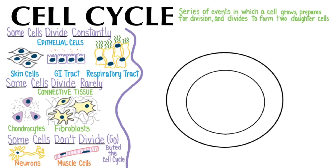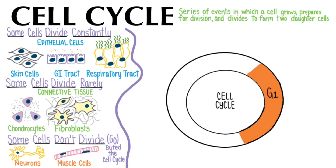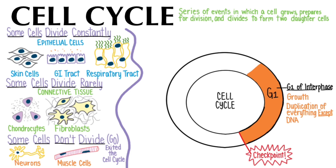We'll use this circle to represent the activities that occur during the cell cycle. The first portion is called G1. The G sometimes is said to stand for growth, and sometimes it's described as gap. G1 of interphase is a time of rapid growth in size of the cell, as it accumulates lots of enzymes necessary for the upcoming division, and duplicates organelles and most everything except for the DNA. A checkpoint occurs here, confirming that the cell is healthy and prepared to divide. Mutations in the DNA or other serious cell problems would block the cell from going further in the cell cycle and probably trigger apoptosis, which is an organized form of cell death. One of its functions is to prevent potentially cancerous cells from dividing.